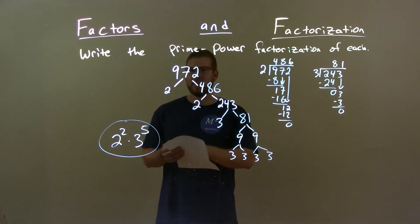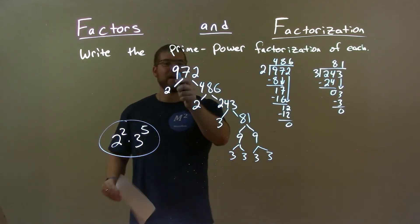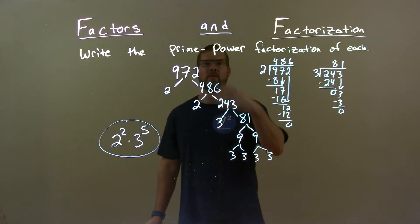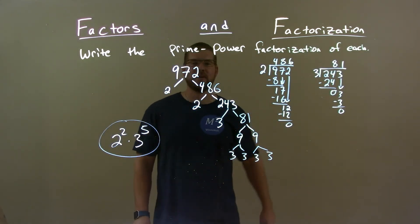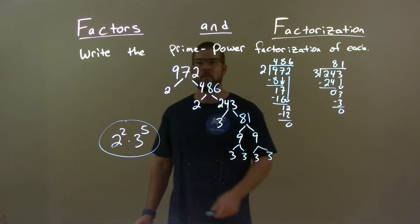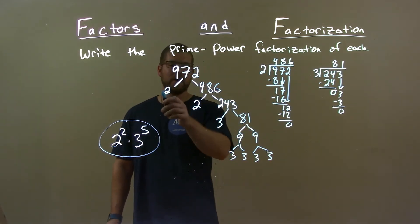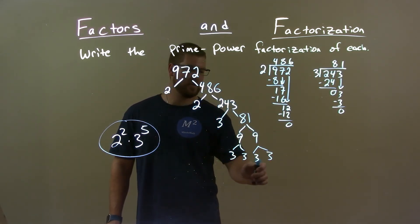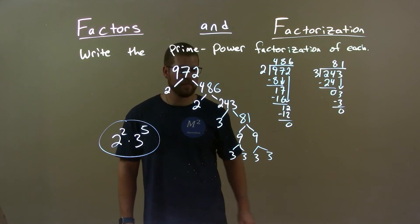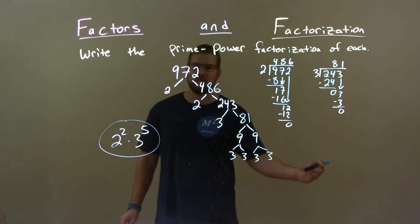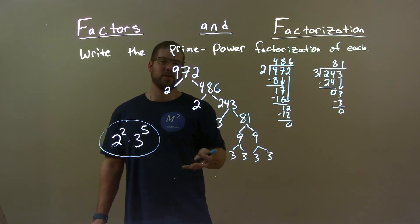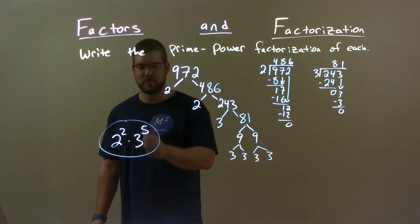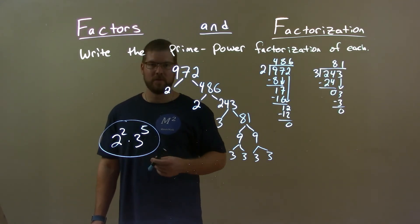Quick recap: we were given 972 and had to write the prime power factorization. We found 972 to be two times two times three times three times three times three times three, which comes together to our final answer: two squared times three to the fifth power.